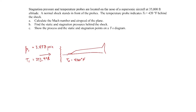Just for terminology, P1 is called a static pressure, and T1 is called a static temperature. The temperature at the probe is a stagnation temperature, and the pressure that would be read by the probe, P0, would be a stagnation pressure. So stagnation pressure and stagnation temperature at the probe.